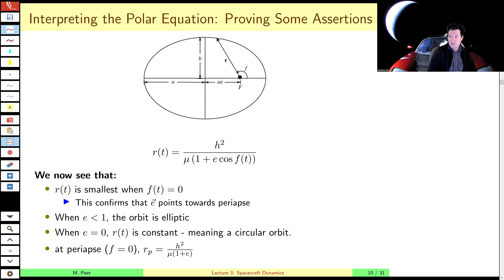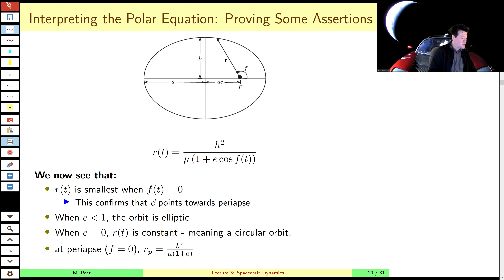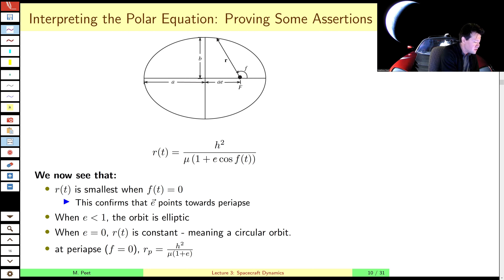Hello class, and welcome back to part B of lecture three. In part A, we introduced the eccentricity vector, which was not a physical invariant of the system, nor was it really an orbital element, but something in between. However, we certainly used it to derive our first orbital element, which is eccentricity — specifically this little e right there.